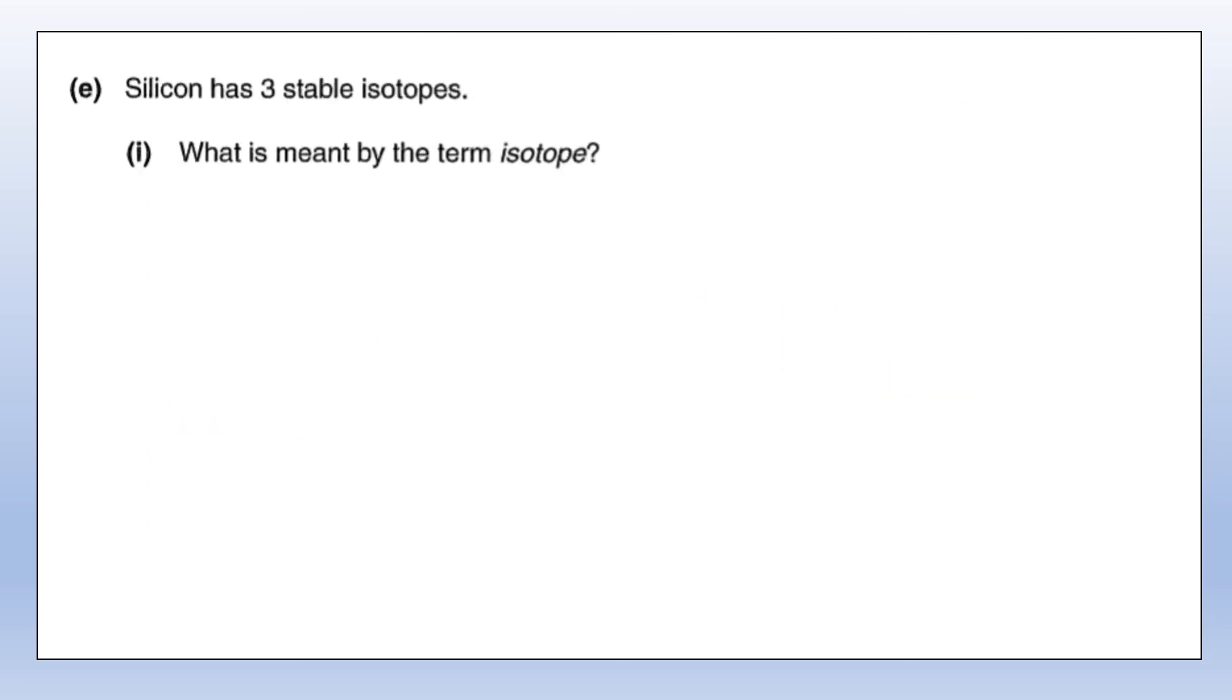Silicon has three stable isotopes. What do we mean by an isotope? An isotope is when you have the same element, meaning they have the same number of protons, but they have a different number of neutrons.